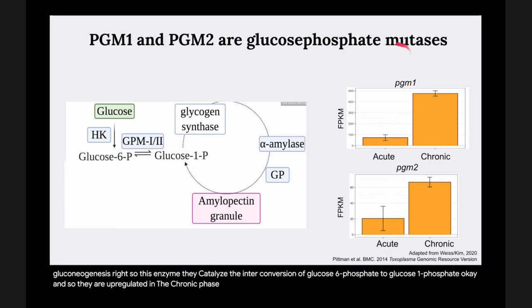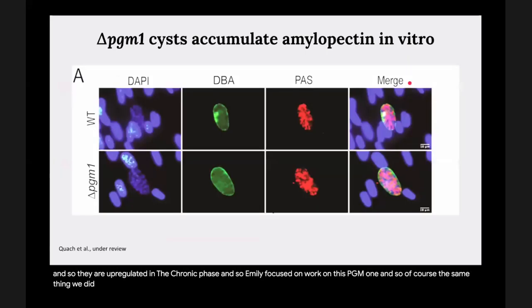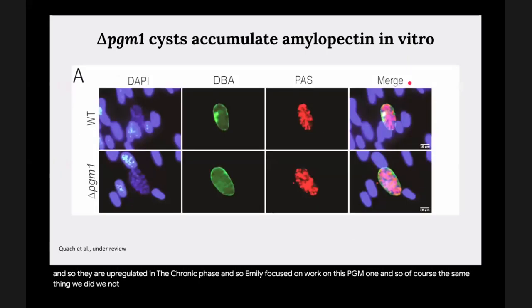My graduate student Emily wanted to look at GPM1 and GPM2. They are isozymes, but they don't follow the alternating pattern — both are upregulated in chronic infection. GPM1 and GPM2, or phosphoglucomutases, sit at the corner between glycolysis, amylopectin biosynthesis, and gluconeogenesis. They catalyze the interconversion of glucose-6-phosphate and glucose-1-phosphate. They are upregulated in the chronic phase, so Emily focused on PGM1.